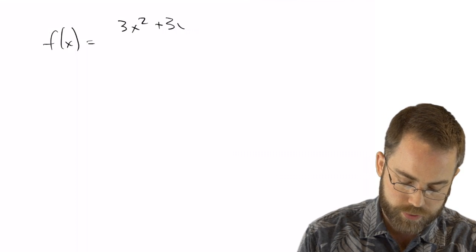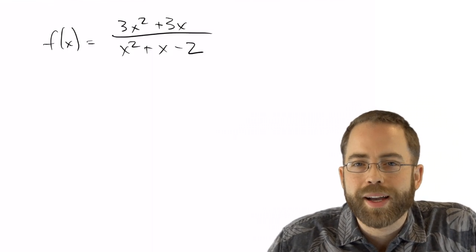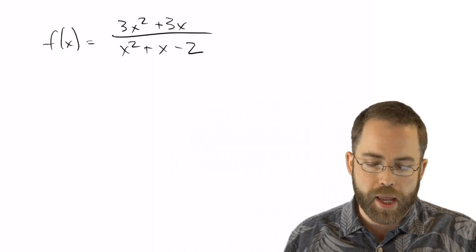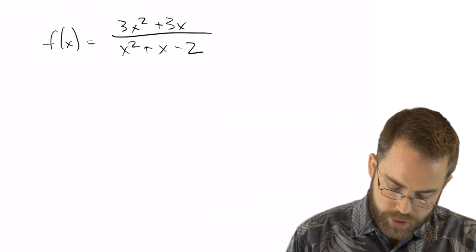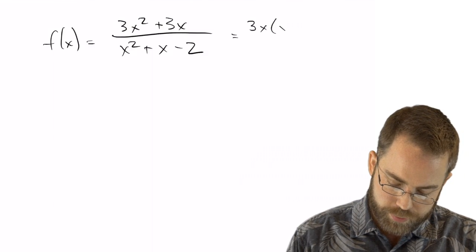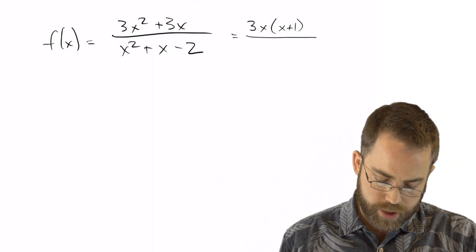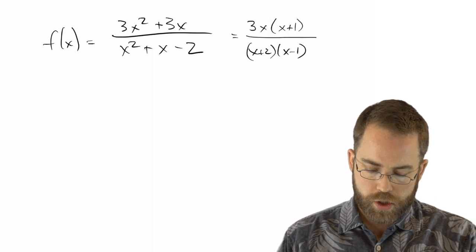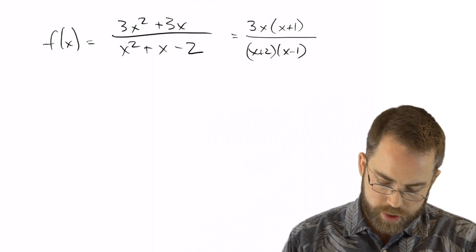Let's do another example. f of x equals 3x-squared plus 3x over x-squared plus x minus 2. This is why we practice factoring and solving polynomials — we need to know when these things equal zero, so we need to be able to solve the top and bottom polynomials, which usually requires factoring. On top, I can take out a 3x and be left with x plus 1. On the bottom, what multiplies to negative 2 and adds to positive 1? That's x plus 2 and x minus 1. Nothing cancels. When does the top equal zero?